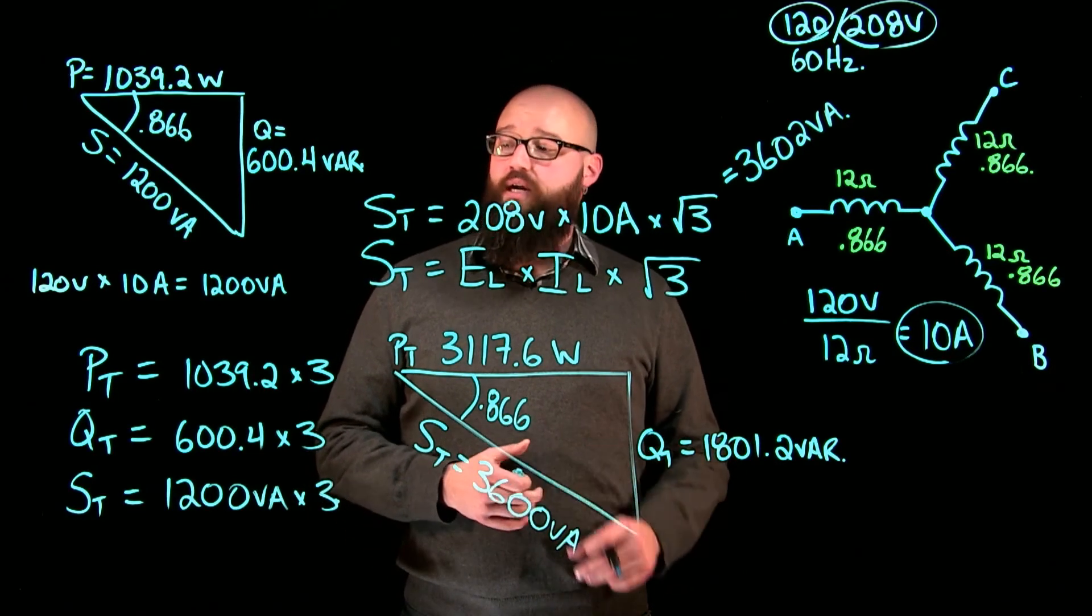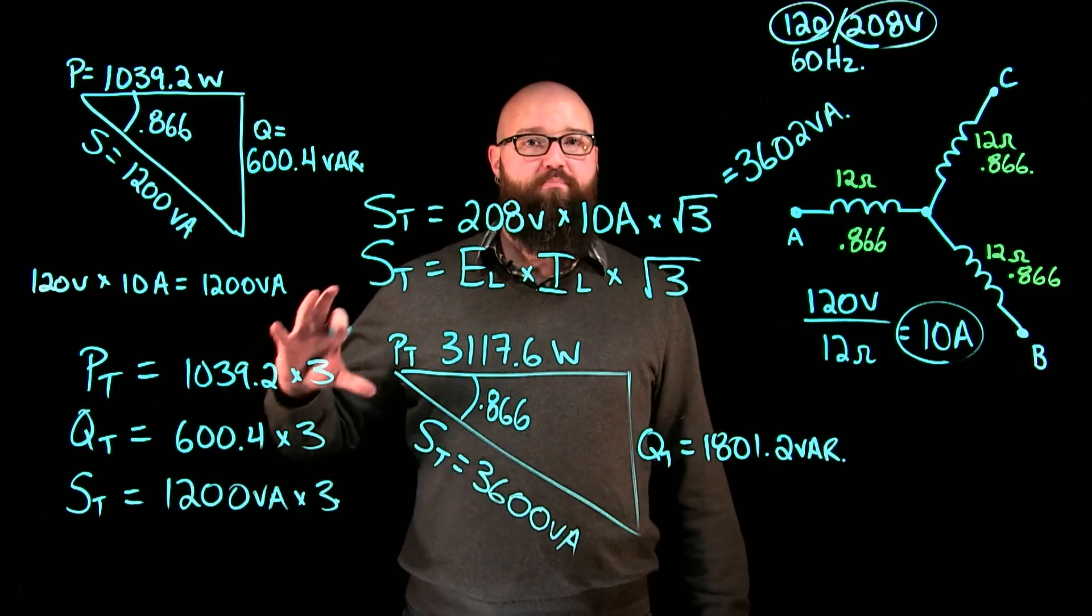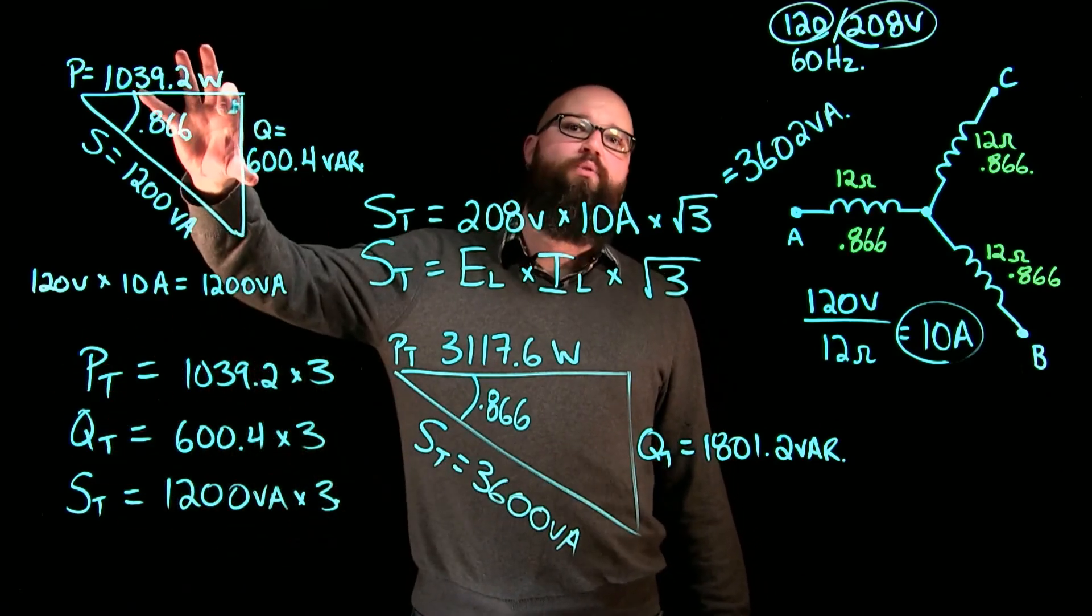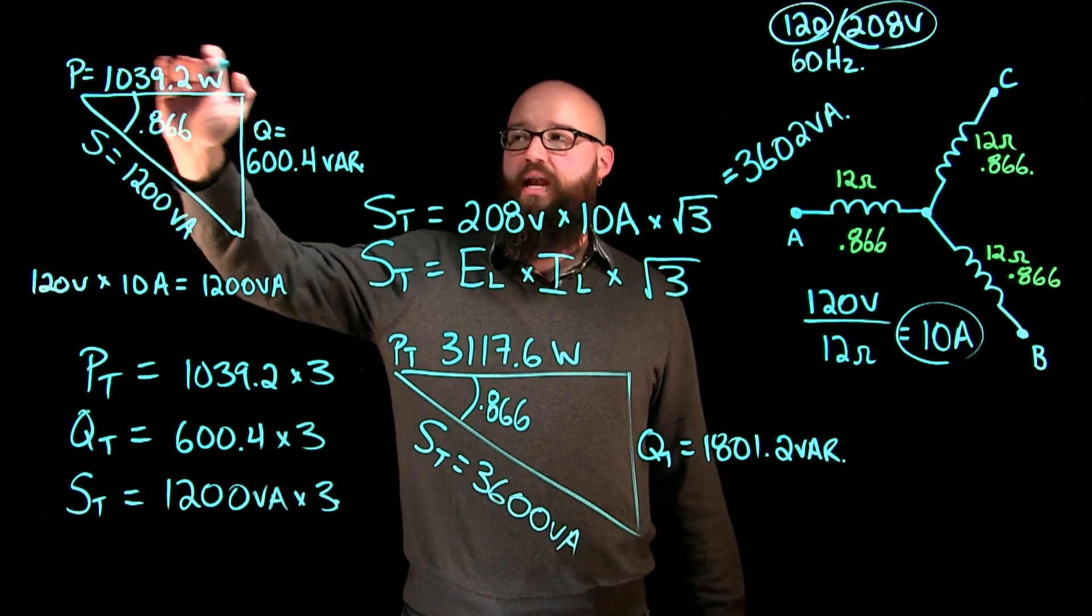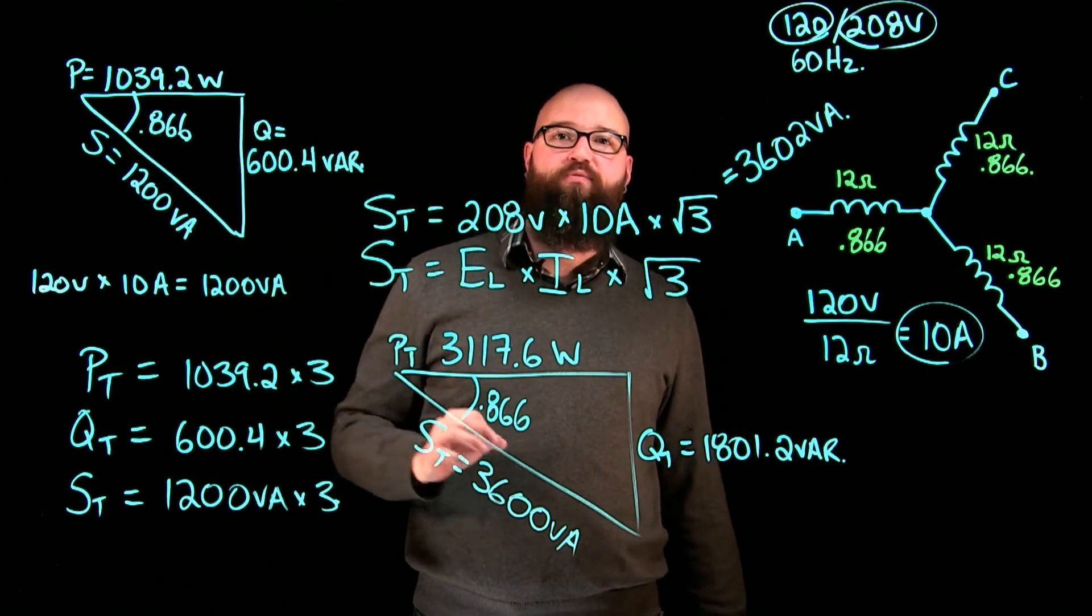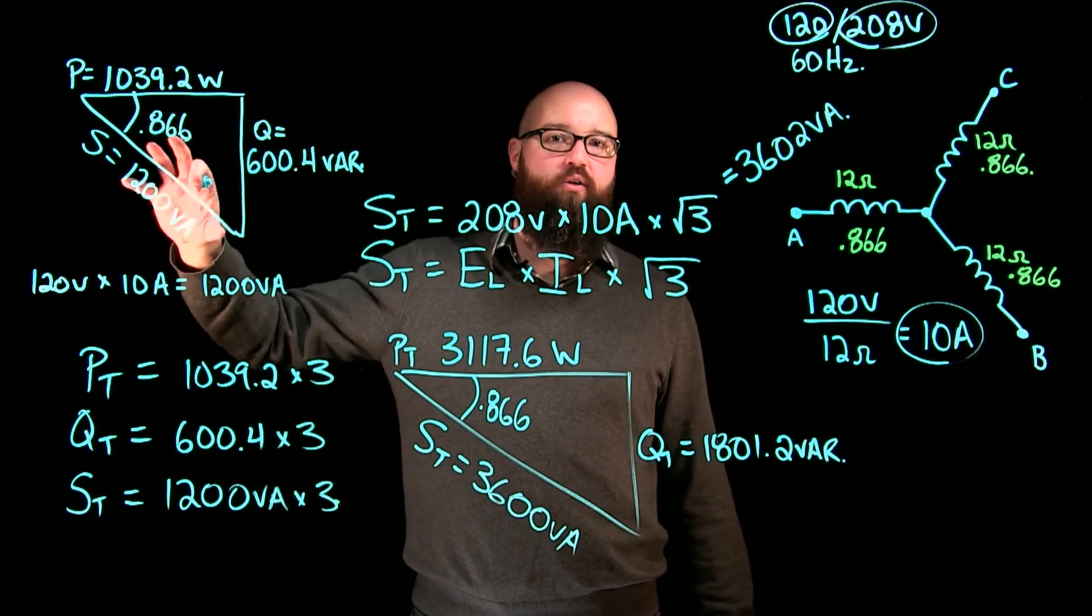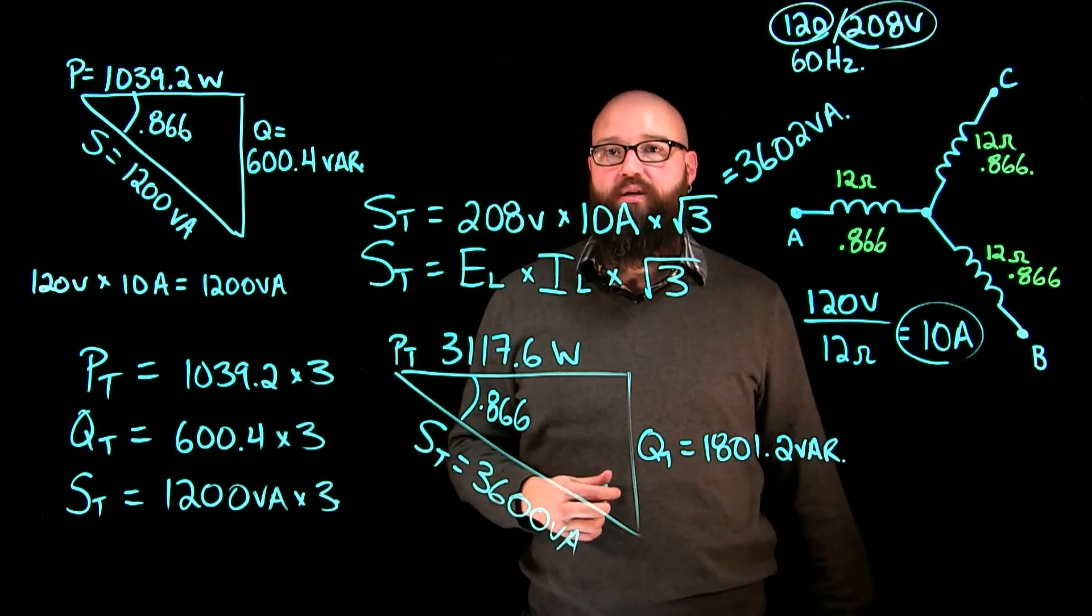If you were to work with an unbalanced circuit this would not work. You could still build three individual power triangles and add up your power and your reactive power, but your VA would have to be calculated individually per triangle and we can't add those up because they would be at different angles.